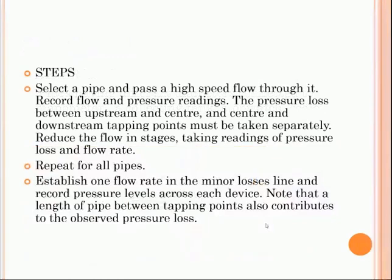A pipe of the required diameter — 50 mm, 40 mm, or 25 mm — is selected from the setup. Except for the selected pipe, the rest are closed. The main inlet valve is opened to allow water to flow through the selected diameter pipe. Open the pipe valve and change the knob of the manometer from the isolate position to the air vent position to remove air bubbles inside. Change the knob to the read position when steady flow is reached inside the pipe.